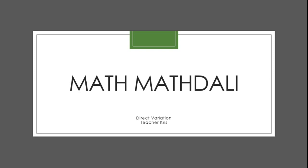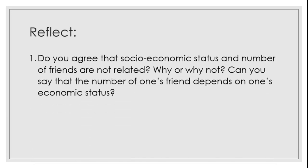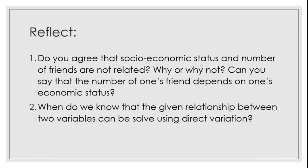Before we proceed to our topic, let's have the following first. I want you to get your notebook and write the following. Do you agree that socio-economic status and the number of friends are not related? Why or why not? Can you say that the number of one's friends depends on the economic status? Number two: when do we know that a given relationship between two variables can be solved using direct variation?